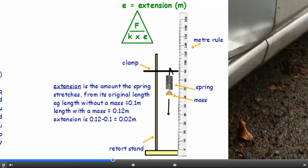For example, the length without a mass is 0.1 metres. If you hang a mass on the end, it now measures 0.12 metres. So the extension, how much has it stretched by? 0.12 minus 0.1, so the extension is 0.02 metres.